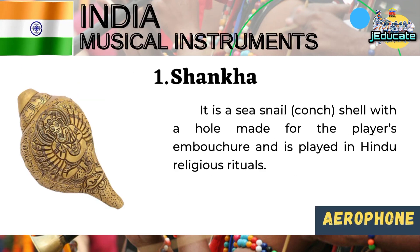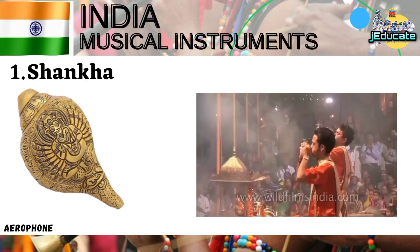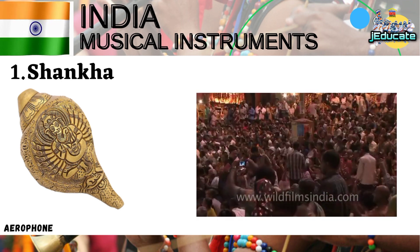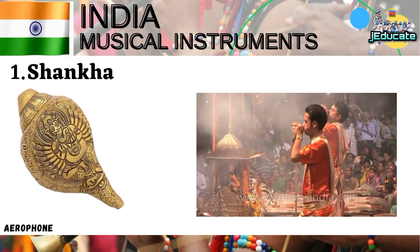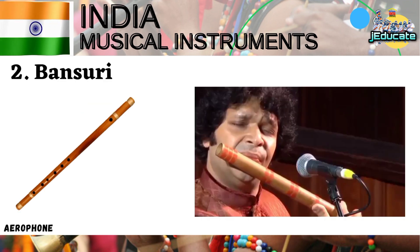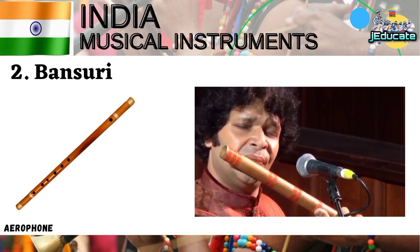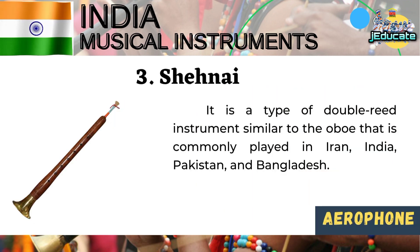India Musical Instruments. Number 1, Shankha — it is a sea snail conch shell with a hole made for the player's embouchure, and is played in Hindu religious rituals. Number 2, Bansuri — it is a type of flute made of bamboo, and is a transverse alto flute used in Hindustani classical music. Number 3, Shehnai — it is a type of double reed instrument similar to the oboe, commonly played in Iran, India, Pakistan, and Bangladesh.